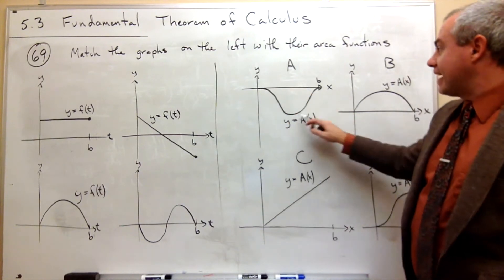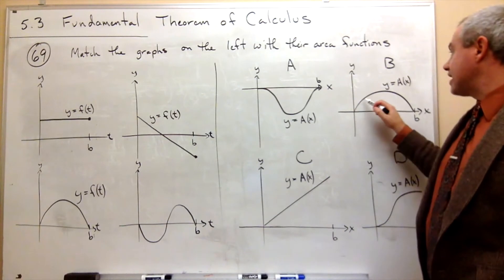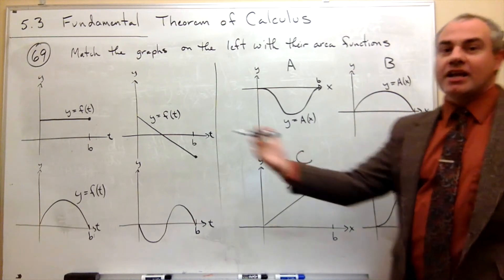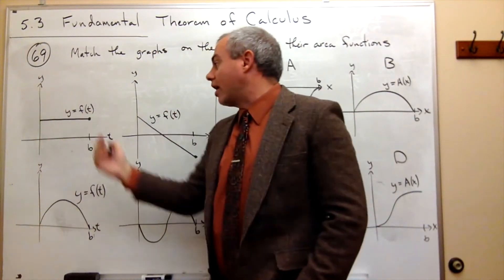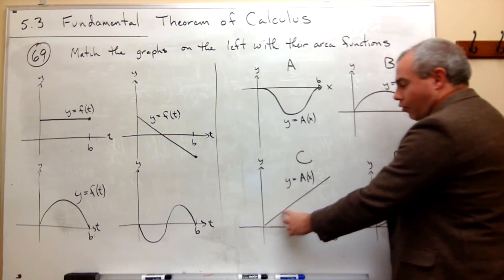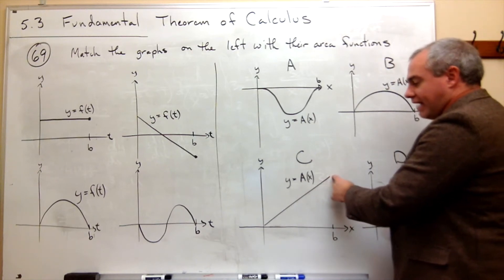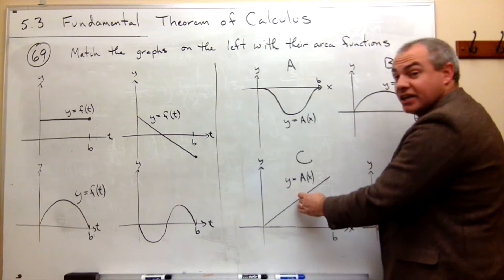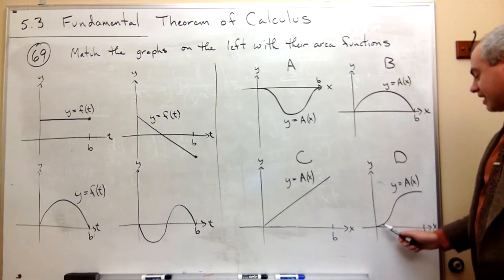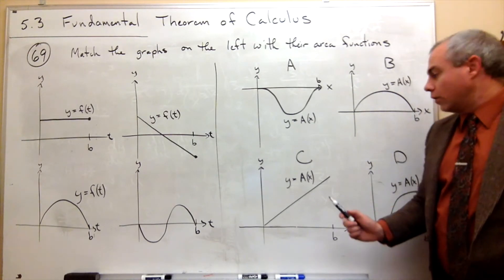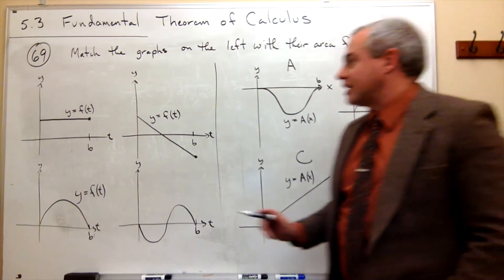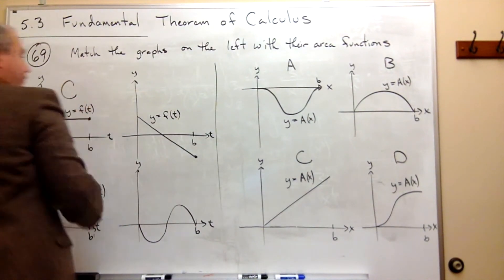Which of these area functions is this? Well, this one says the area is negative everywhere — that's not it. This one says the area is positive, but at the end I get zero area, and I know I'm getting more and more area as I come across. This one looks perfect, because as I move across I get more and more area, and if I were halfway there I would have picked up half of the area. The other remaining option doesn't do it in a linear way. So the area function for the first graph is letter C.